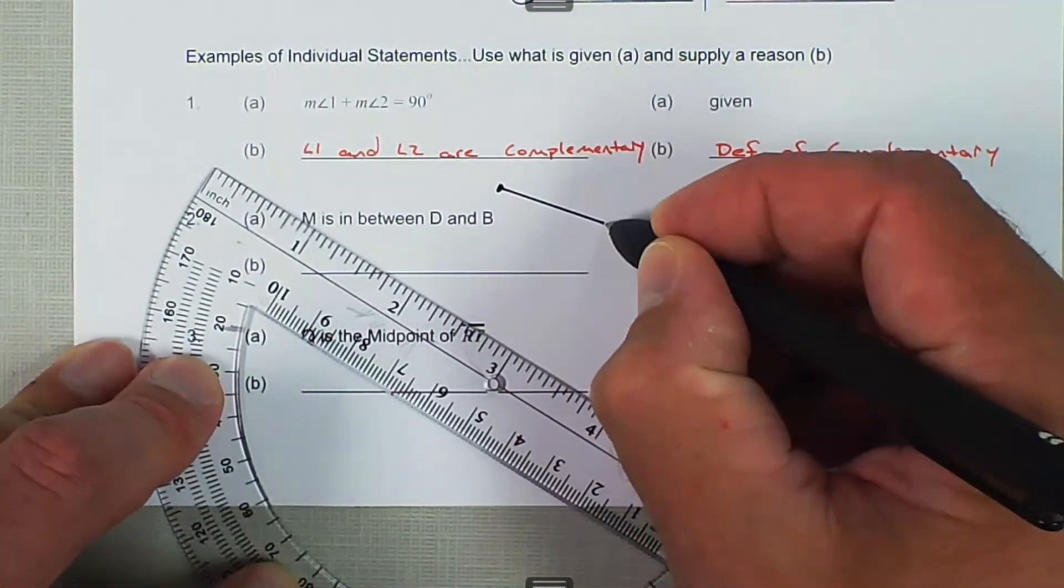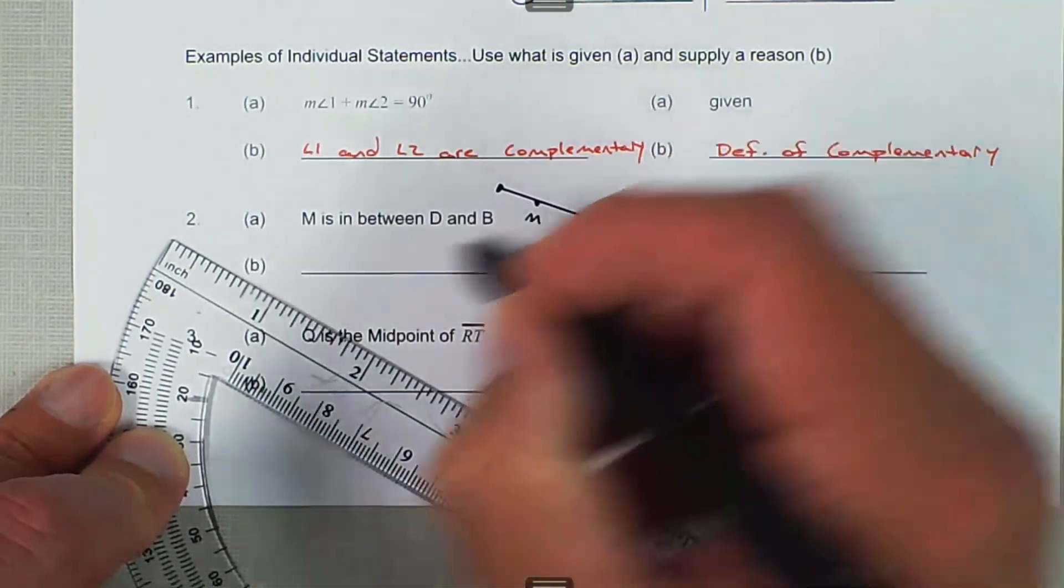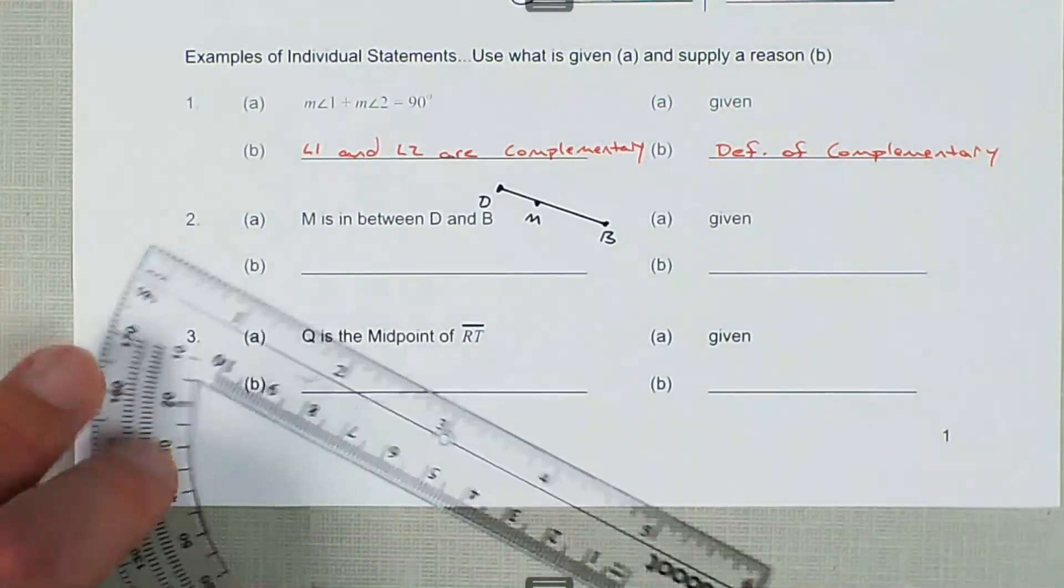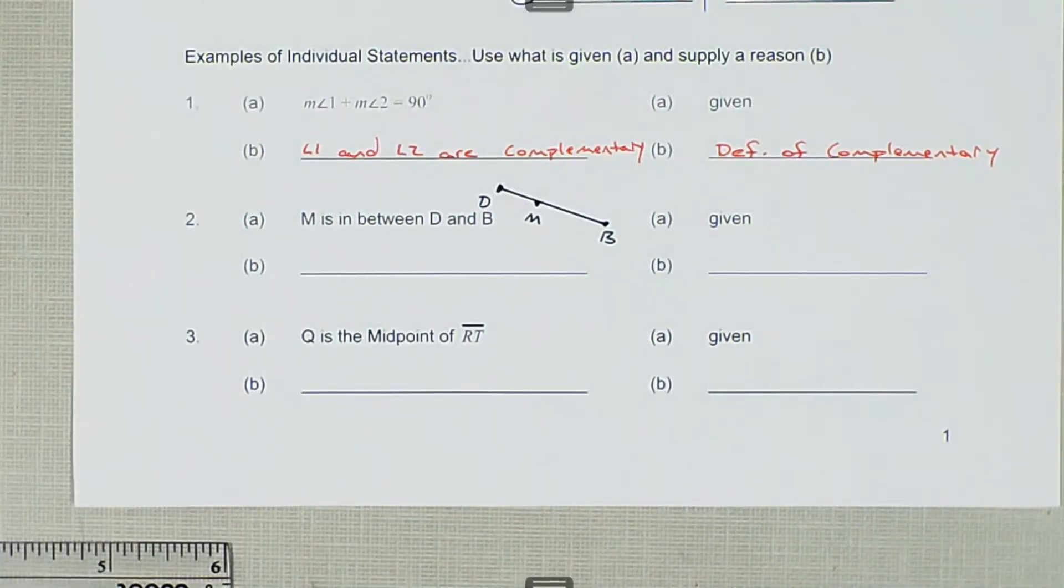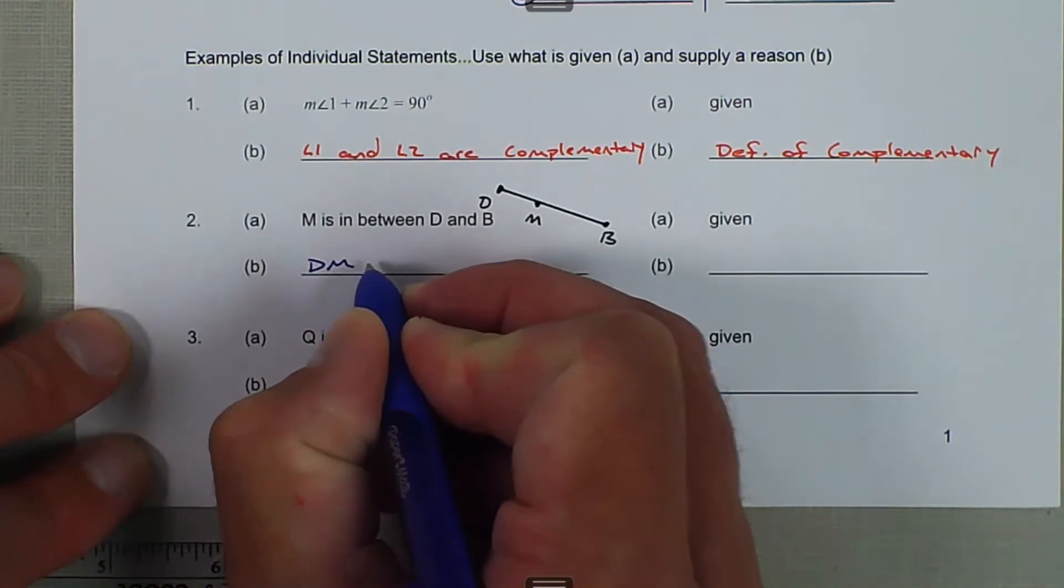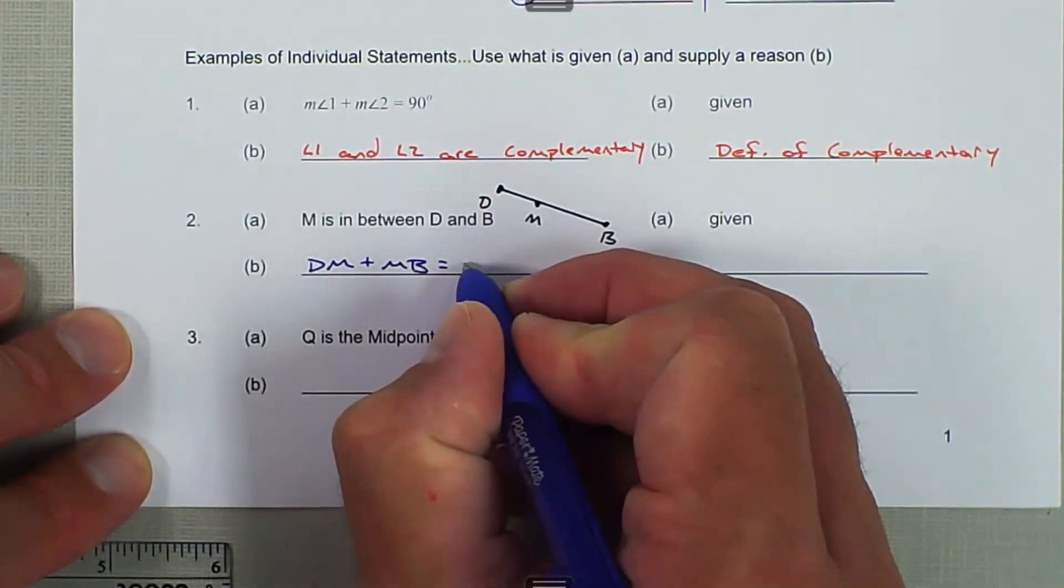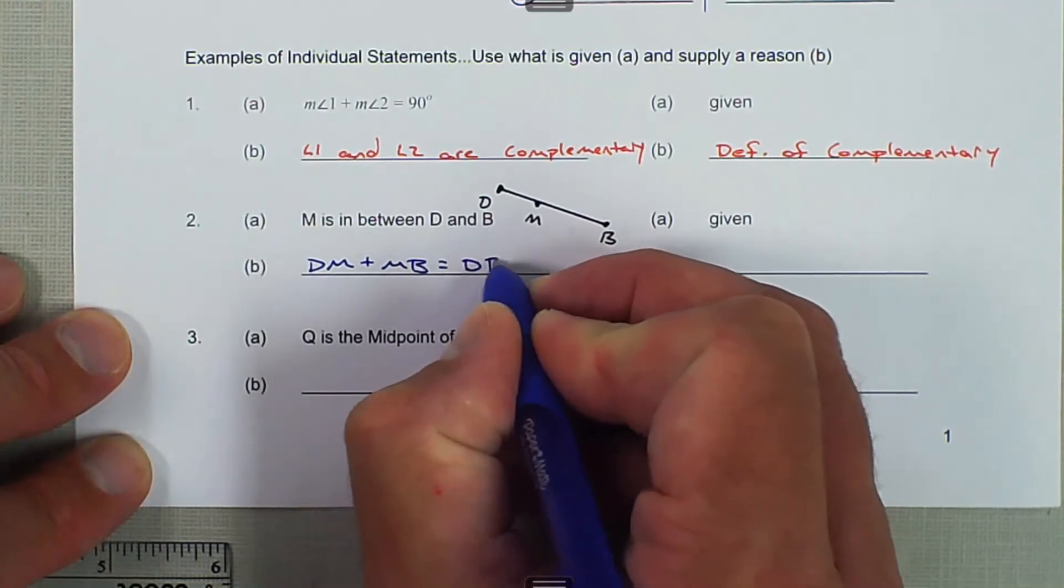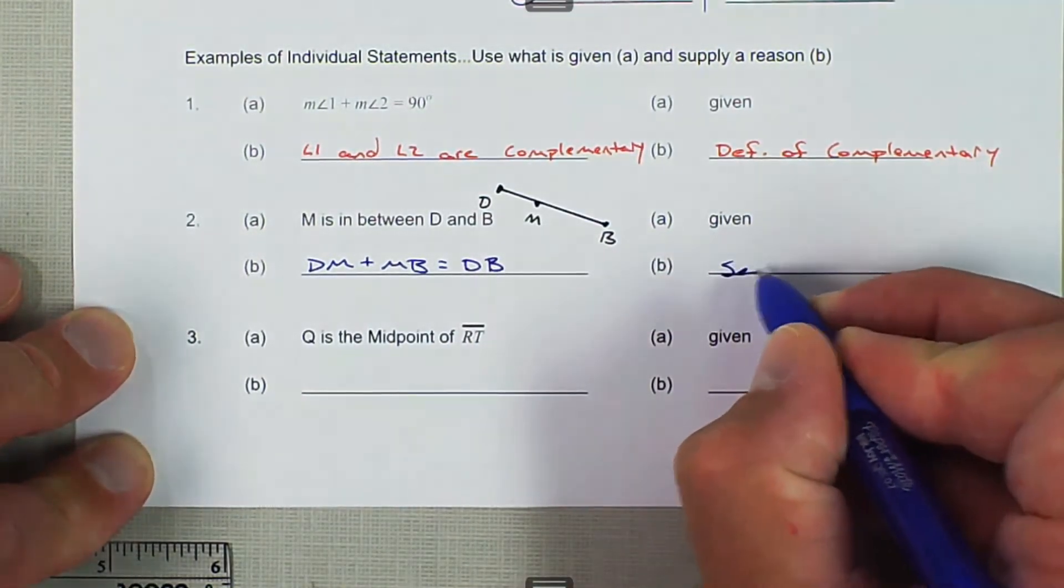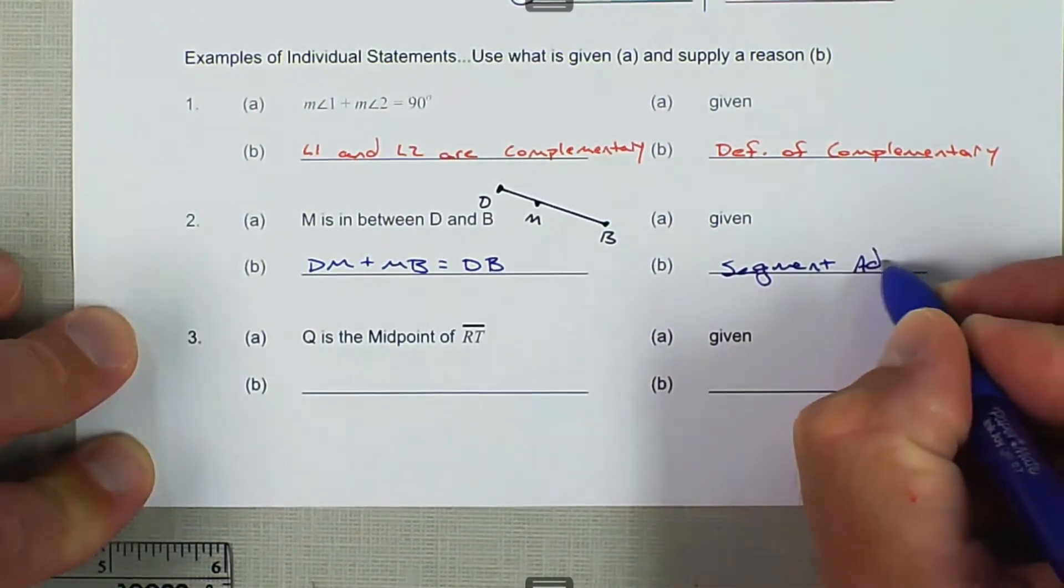That doesn't say anything about being in the middle, but it just says M is between D and B. So in this case, we could add these together: DM plus MB is equal to the whole thing, which is DB, and that would be segment addition postulate.